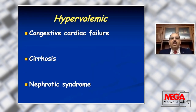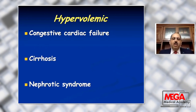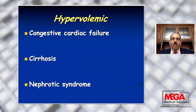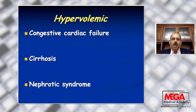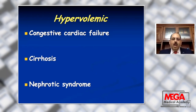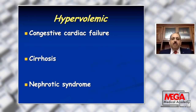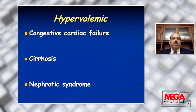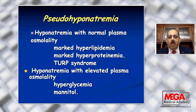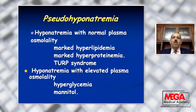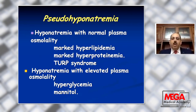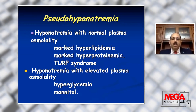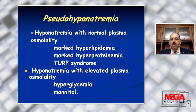In hypervolemic hyponatremia, assessment of the patient shows the patient is congested with neck veins, crackles on the lung, maybe pleural effusion, pericardial effusion, and edema of the lower limb, in cases of congestive heart failure, liver cirrhosis, and nephrotic syndrome, where it is called dilutional hyponatremia. Pseudohyponatremia or false hyponatremia may occur with normal plasma osmolarity, as in case of marked hyperlipidemia, marked hyperproteinemia, and in TURP syndrome after irrigation by a large volume of glycine, causing dilutional hyponatremia.